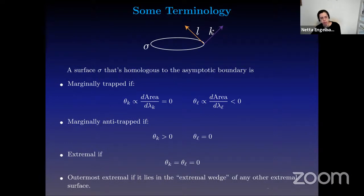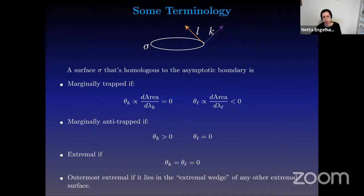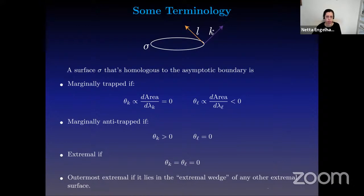Before I can talk about the general idea, I need to introduce a little bit of terminology. Whenever I say a surface, I'm always going to talk about a surface as homologous to the asymptotic boundary, and I mean a spacelike codimension-two surface, which in particular means that I have these future-directed outgoing null vectors k and l fired from it. We call the surface marginally trapped if it has vanishing expansion in one direction and negative expansion in the other, where expansion θ_k is proportional to the changing area along that particular direction. We'll call it marginally anti-trapped if it has positive expansion in one direction and zero expansion in the other. It's extremal if it has vanishing expansion in both directions — the statement that the area doesn't change to leading order in any perturbation. And outermost extremal if it lies in the so-called extremal wedge, the analog of the entanglement wedge for any other extremal surface.